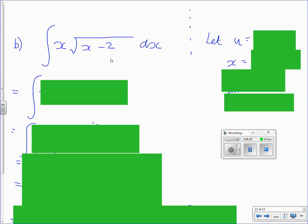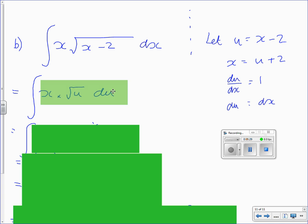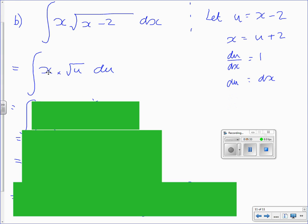Here's a similar example. This time you would let u equal x minus 2, and again du is dx. But when we substitute we have an x left, so you have to write x in terms of u.